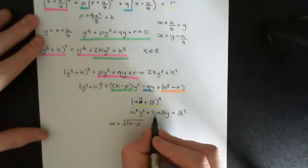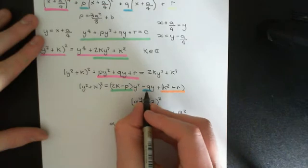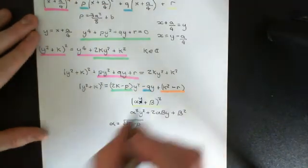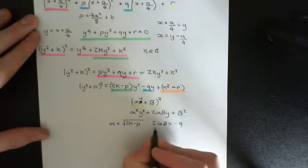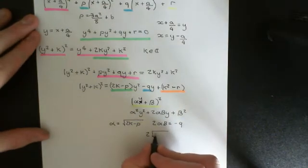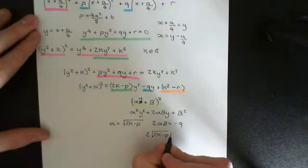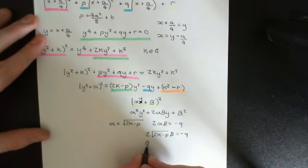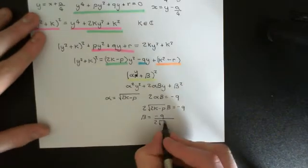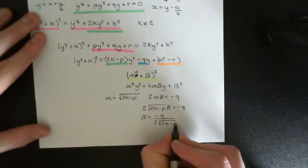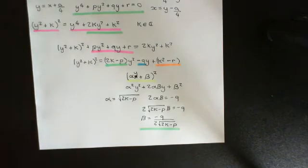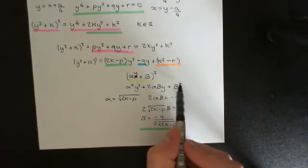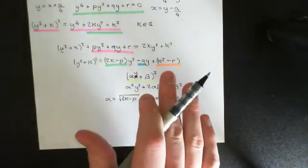Then what we get is that 2 alpha times beta is going to have to equal negative q. We now know what alpha has to equal, so we can work out what beta has to be equal to. Substituting in alpha, we get 2 times the square root of 2k minus p times beta equals negative q. So that tells us that beta equals negative q over 2 times the square root of 2k minus p. But what we now need to make sure is that beta squared equals k squared minus r, and that's not assured at all. This is where we're going to get our condition on k — our restriction for which k values will actually make this work.